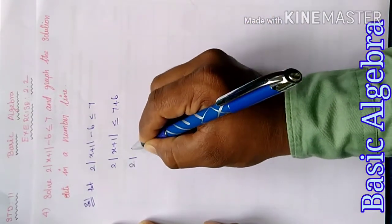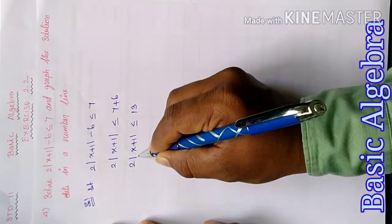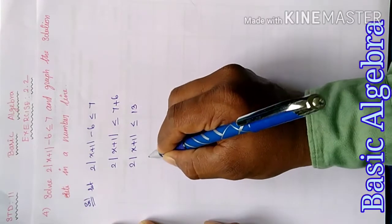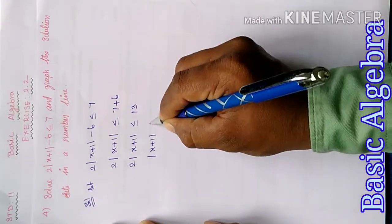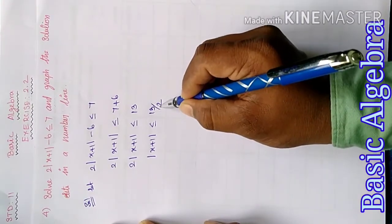Adding, we get 2 times modulus of x plus 1 less than or equal to 13. Dividing both sides by 2, modulus of x plus 1 less than or equal to 13 by 2.